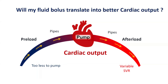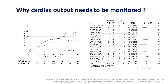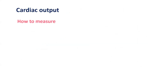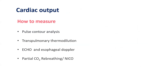However, the more important question is: will a fluid bolus translate into a better cardiac output? Cardiac output monitoring is very important as it translates into improved mortality if cardiac output is improved. We can measure cardiac output by several means, including pulse contour analysis, transpulmonary thermodilution, echocardiography and esophageal Dopplers, partial CO2 rebreathing (NICO), and thoracic bioimpedance.